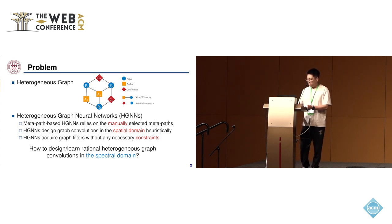Additionally, these HGNNs obtain graph filters without any necessary constraints, making them challenging to learn. So there is a natural question: How should we design or learn rational heterogeneous graph convolutions in the spectral domain?